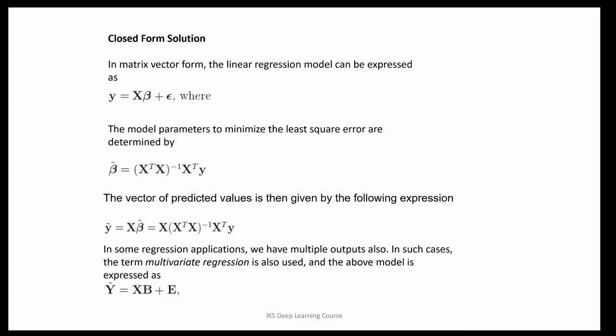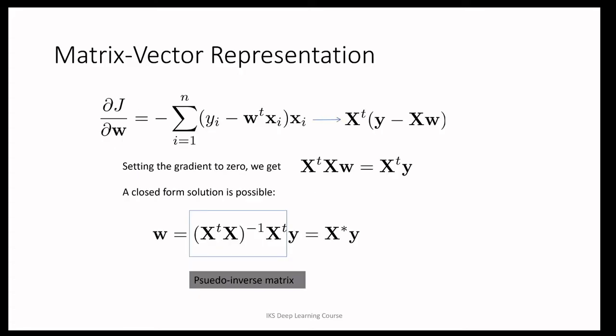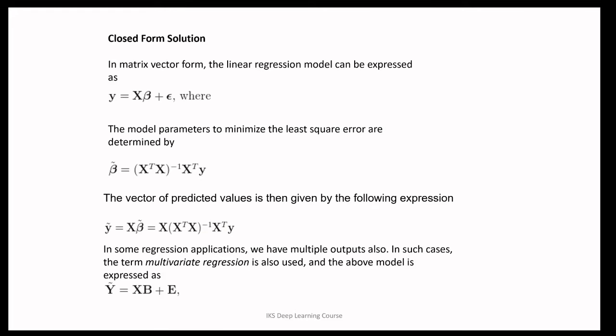This minimization is typically done by some kind of gradient search, but sometimes you may want to use a closed form solution. In matrix-vector form, the linear regression model can be expressed compactly. The model parameters that minimize the least square error are determined by the expression for beta-tilde, and the vector of predicted values can be calculated using the expression for y-tilde.